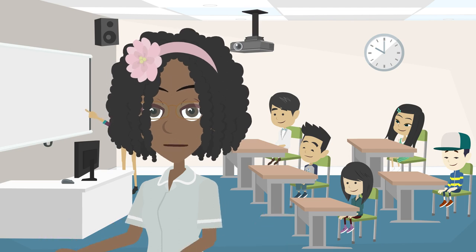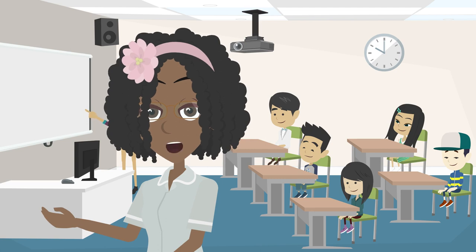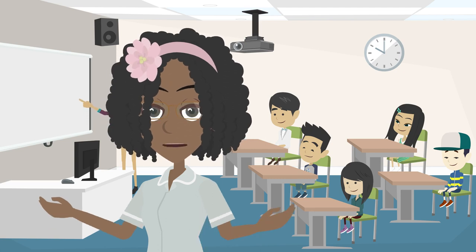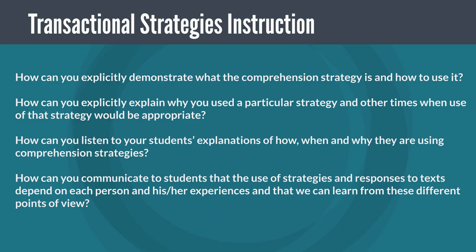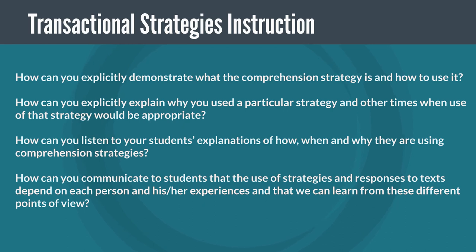Use the following questions to think about how you can integrate elements of transactional strategies instruction into a discussion of any text — fictional or informational, novel or textbook, with any grade or academic level of student. How can you explicitly demonstrate what the comprehension strategy is and how to use it? How can you explicitly explain why you used a particular strategy and other times when use of that strategy would be appropriate? How can you listen to your students' explanations of how, when, and why they are using comprehension strategies?